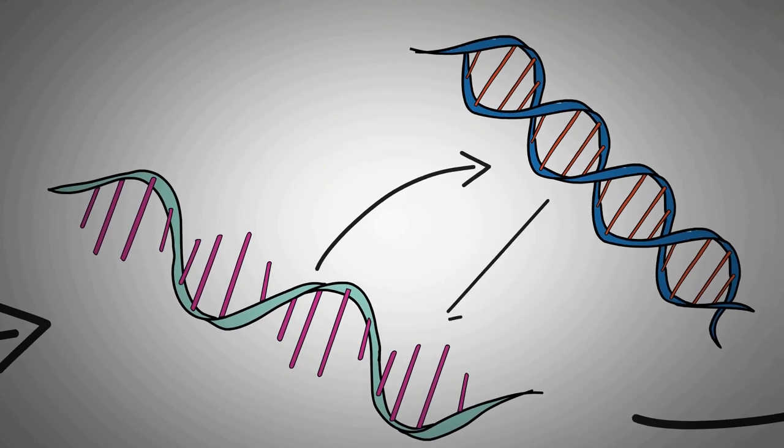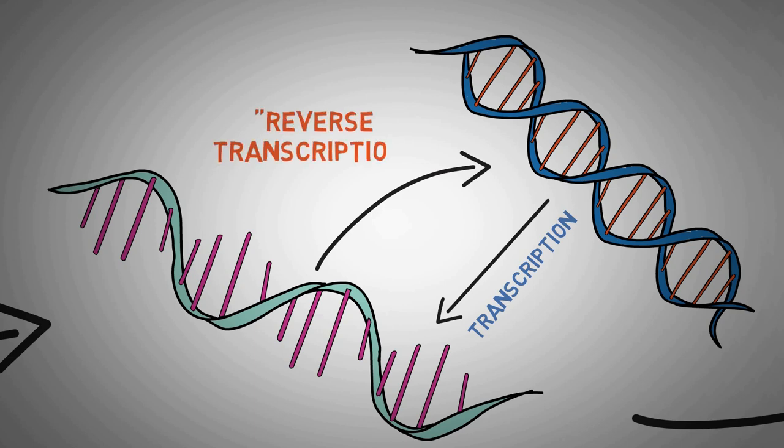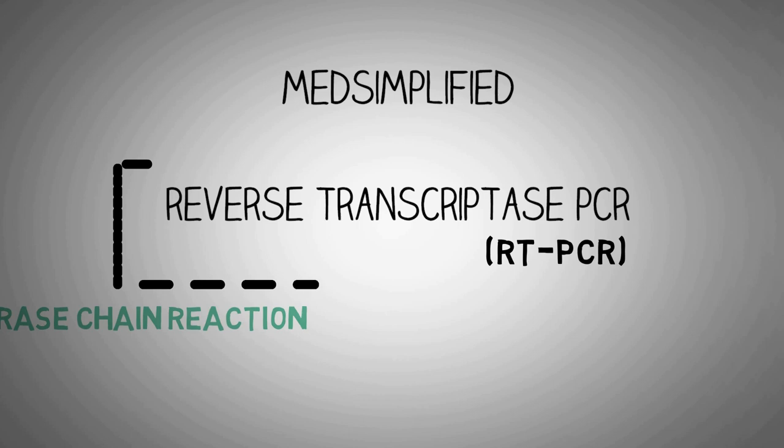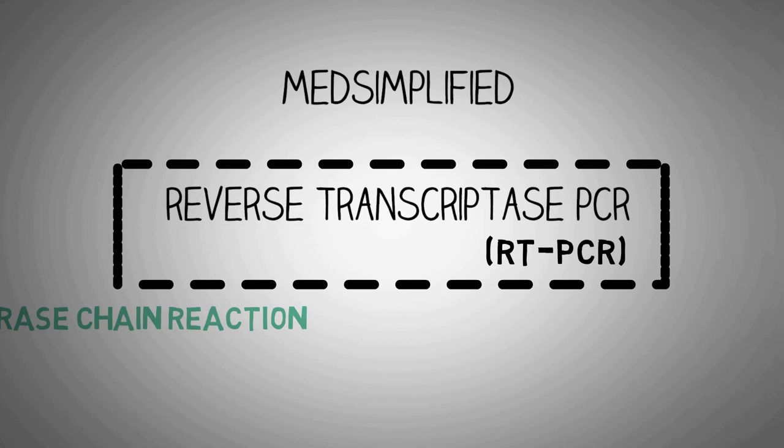If you remember, the process of copying DNA to RNA is known as transcription. Hence, the process of using RNA to form DNA is known as reverse transcription. Using this technique of reverse transcription with the technique of polymerase chain reaction is known as reverse transcriptase PCR, or RT-PCR.